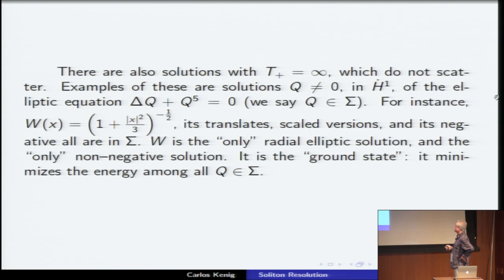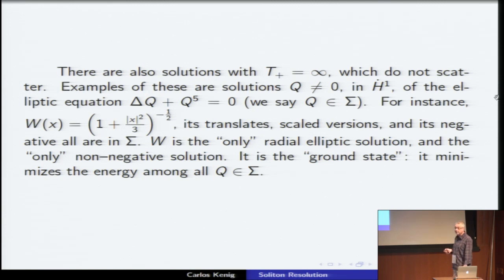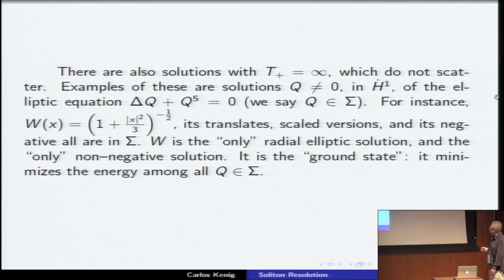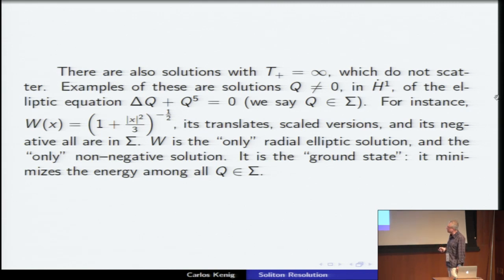You can translate, rescale — respecting the equation — and change sign, since power 5 is odd. The work on this elliptic equation revealed that w is the only radial solution. The fact that it's the only non-negative solution is the work of Gidas and Nirenberg. We call this the ground state because among all the non-zero solutions to the elliptic equation it is the one which has smallest energy — so it's a nonlinear ground state.